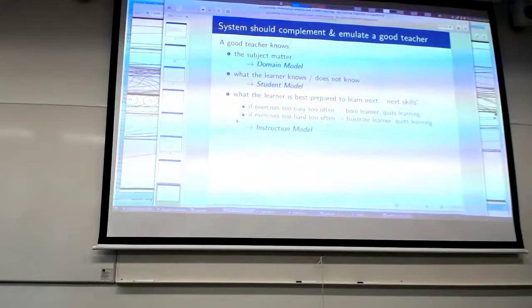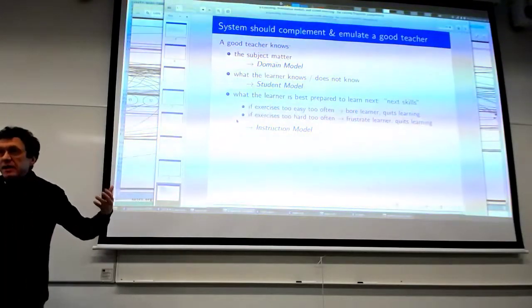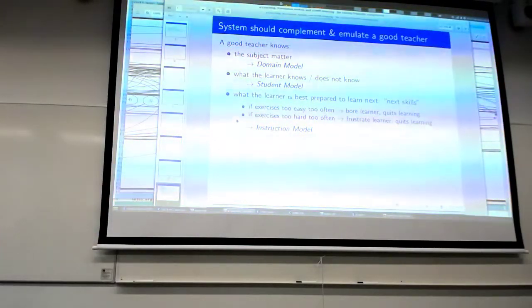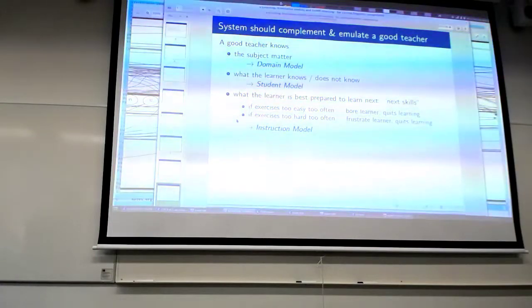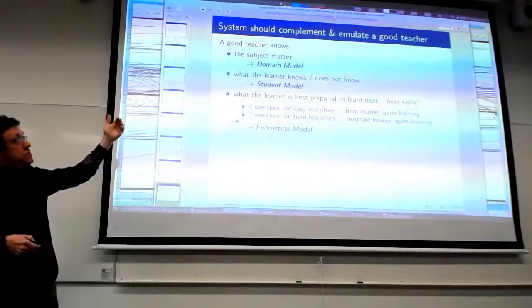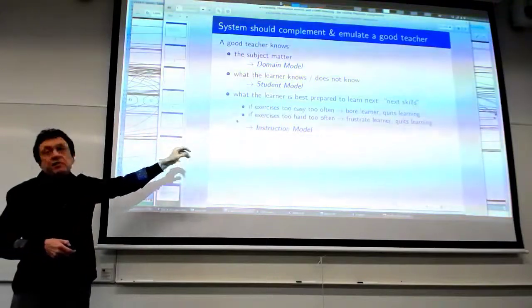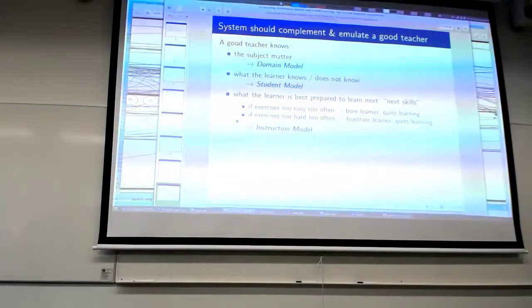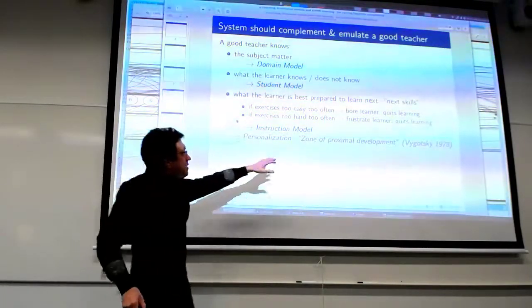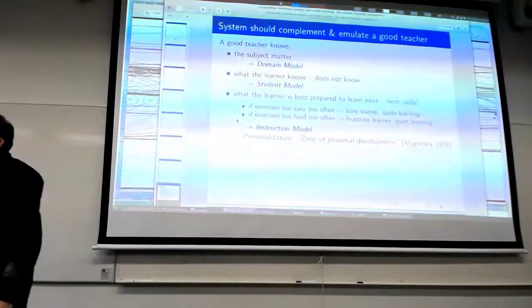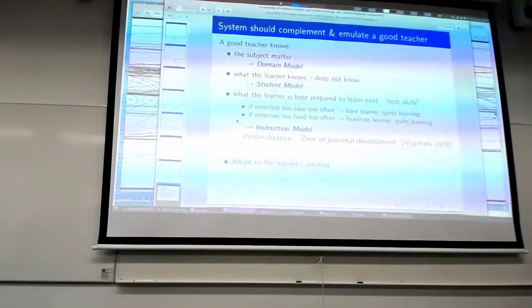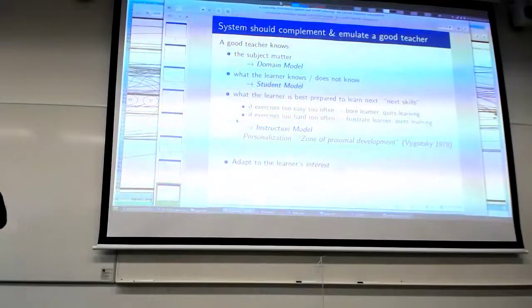Inside the system there are three major components — this is standard for intelligent tutoring systems, a huge field that has nothing to do with language specifically. Anytime you want to tutor somebody, you have these three components: the domain model, which covers the subject matter; the student model; and the instruction model, which tells you how to navigate. These next skills — the buzzword in educational science is 'zone of proximal development' — this is what you're best prepared to learn, from a Russian philosopher who wrote about it a hundred years ago.